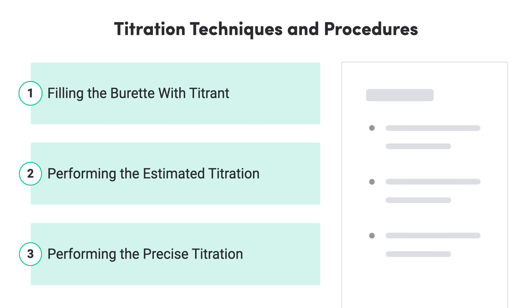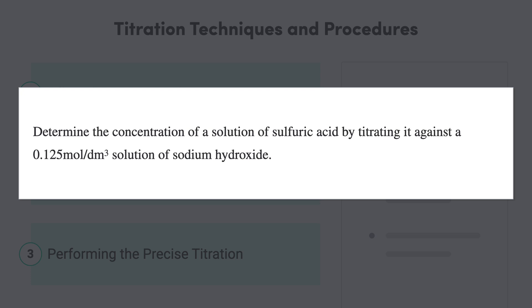This requires us to firstly fill the volumetric equipment accurately, perform an estimated titration, and then perform three rounds of a precise titration. In this particular example we've been asked to determine the concentration of a solution of sulfuric acid by titrating it against a 0.125 molar standard solution of sodium hydroxide. So let's chuck our safety glasses on and get into it.